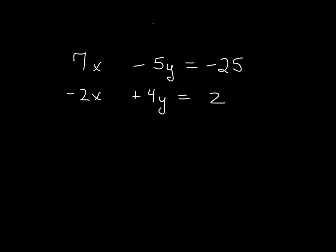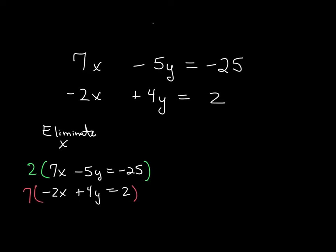If we want to eliminate x, we have to multiply both equations. I want to multiply equation 1 by 2 and the second equation by 7. The reason I want to do that is because when I multiply 2 to all three parts,